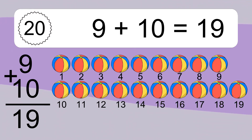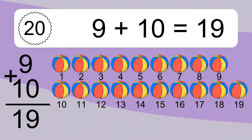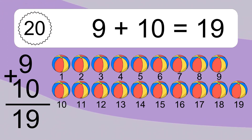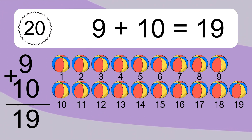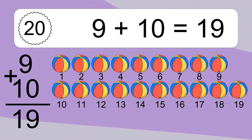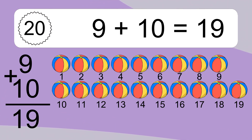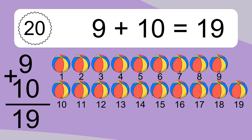9 plus 10 equals what? Let's count it. 1, 2, 3, 4, 5, 6, 7, 8, 9, 10, 11, 12, 13, 14, 15, 16, 17, 18, 19.